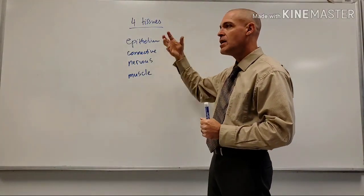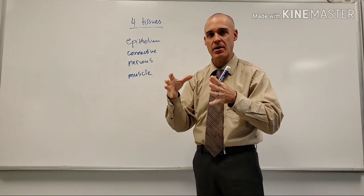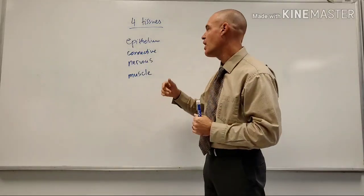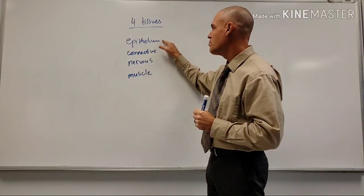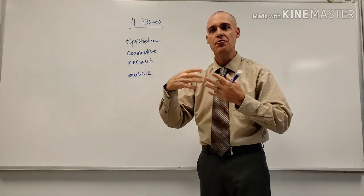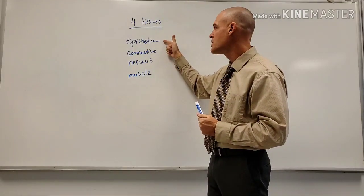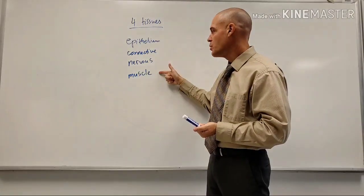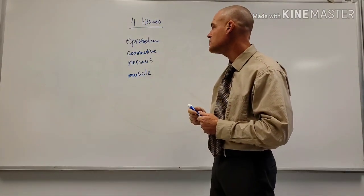Each tissue is going to have a specific function. Epithelium, if you look at it under a microscope, is going to look very distinct - we'll classify them in a minute, which is one of the trickier things. Connective tissue is going to look very different than epithelium and have a different role in the body, and then nerve and muscle are very different from the first two.